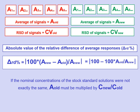To do this, from the detector responses obtained for the five injections of each standard, we first have to calculate the absolute value of the relative difference of average responses in percentage — that is, the ΔRD — which can be calculated as 100 minus the ratio of the mean value of the responses of the old standard A-old to the new standard A-new, multiplied by 100.